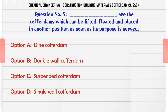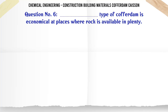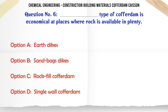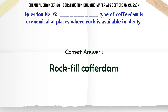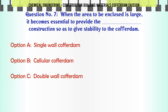Which type of cofferdam is used where rock is available in plenty? A. Earth dykes. B. Sandbag dykes. C. Rock fill cofferdam. D. Single wall cofferdam. The correct answer is: Rock fill cofferdam.